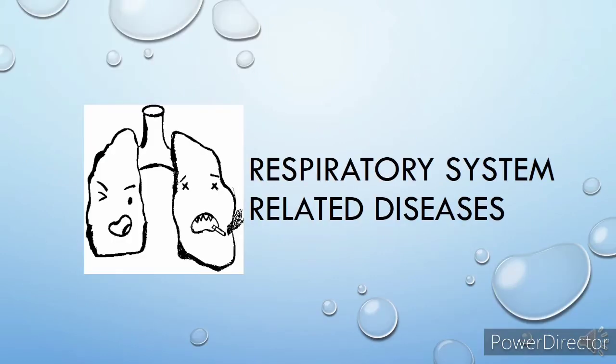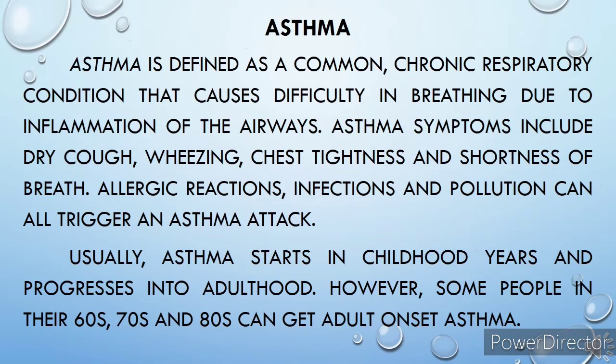The following diseases are respiratory system related. Asthma is defined as a common chronic respiratory condition that causes difficulty in breathing due to inflammation of the airways. Asthma symptoms include dry cough, wheezing, chest tightness, and shortness of breath. Allergic reactions, infections, and pollution can all trigger an asthma attack. Usually, asthma starts in childhood years and progresses into adulthood. However, some people in their 60s, 70s, and 80s can get adult-onset asthma.